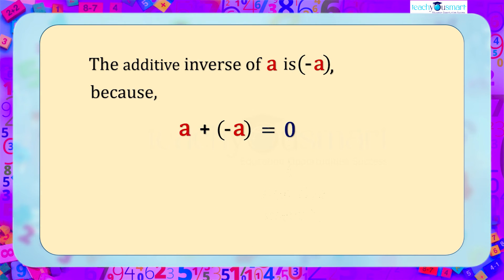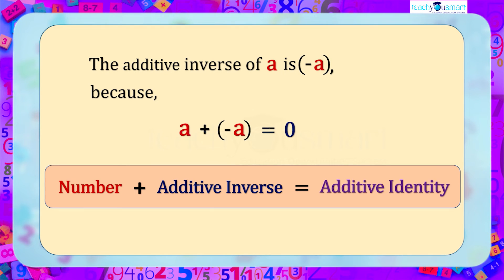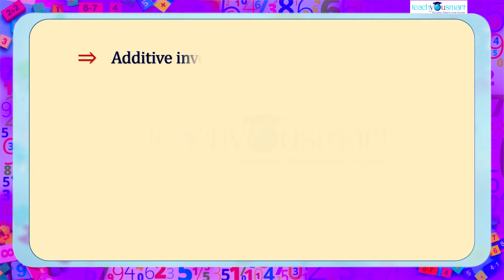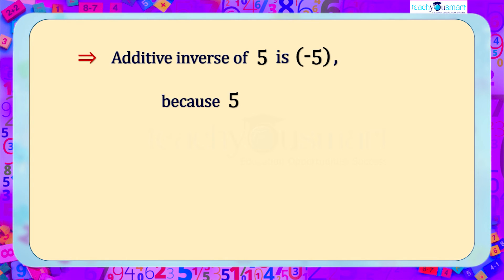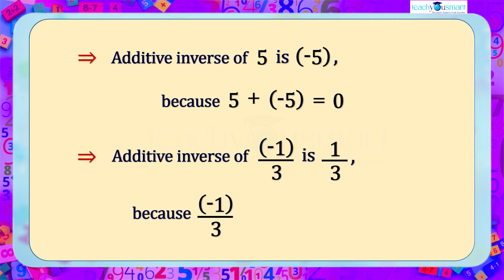Therefore, a number plus its additive inverse gives the additive identity. For example, the additive inverse of five is minus five, because five plus minus five is equal to zero. Similarly, the additive inverse of minus one by three is one by three, because minus one by three plus one by three equals zero.